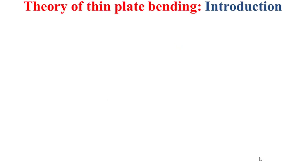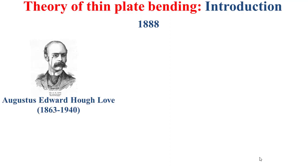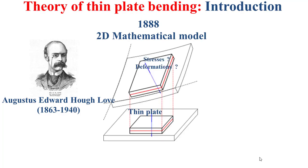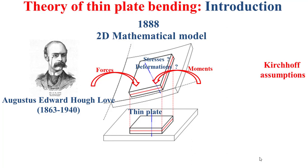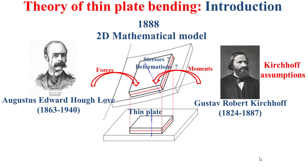First of all, it's to note that the theory of thin plate bending was developed in 1888 by the English mathematician Lowe. This theory presents a 2D mathematical model that permits to determine the stresses and the deformation in a bent thin plate, subjected to external forces and external moments as depicted by the model in this slide. This theory takes into consideration certain assumptions related to the works of the German physicist Kirchhoff, hence their name Kirchhoff assumptions.